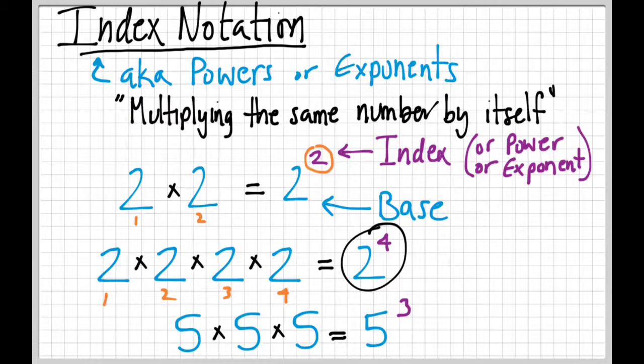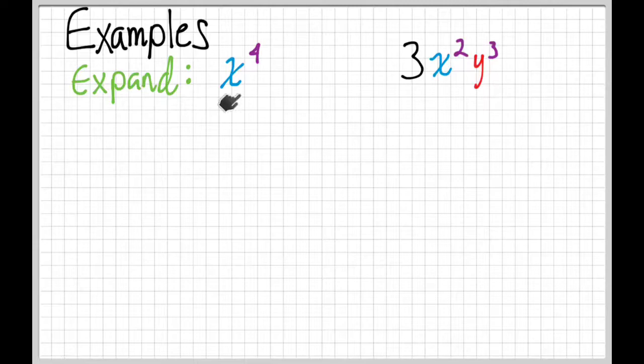Let's look at some examples of expanding and simplifying. We have x to the 4th, and then 3x squared y cubed. We want to expand them, which means write it out so it's not in index form anymore. For the first one, we're going to have four x's: x times x times x times x, and that is x to the 4th.